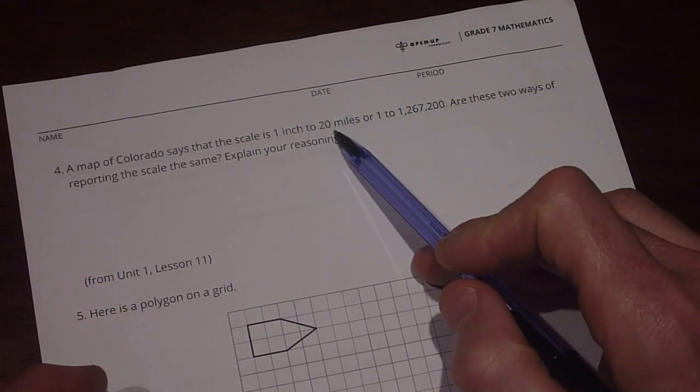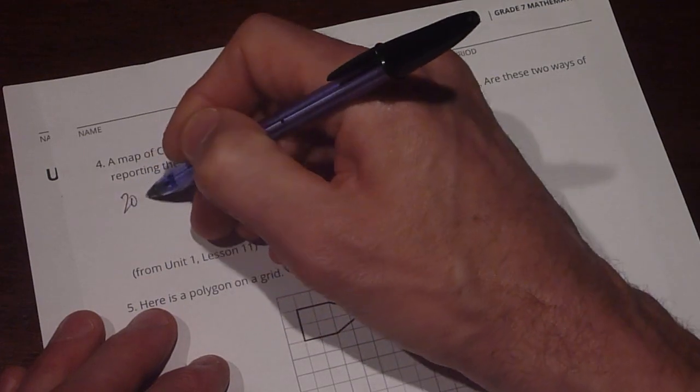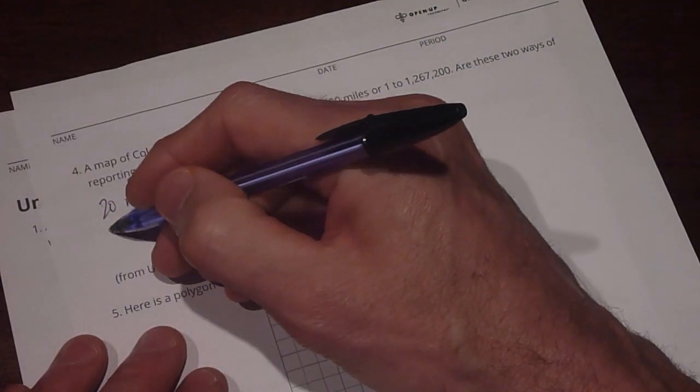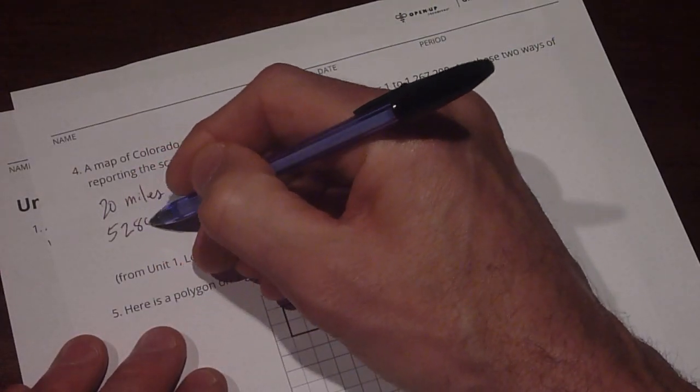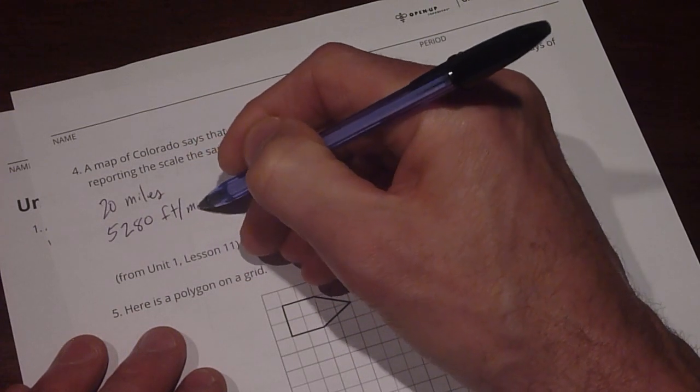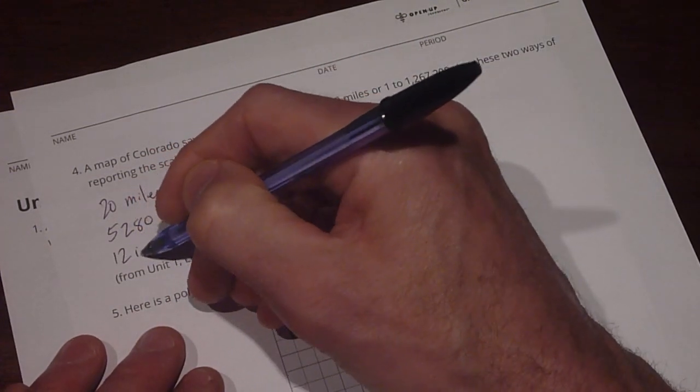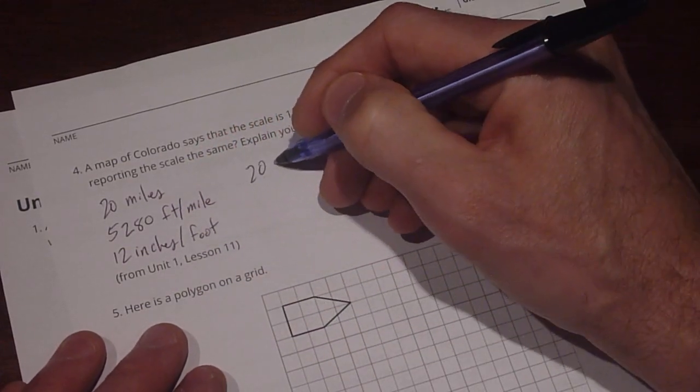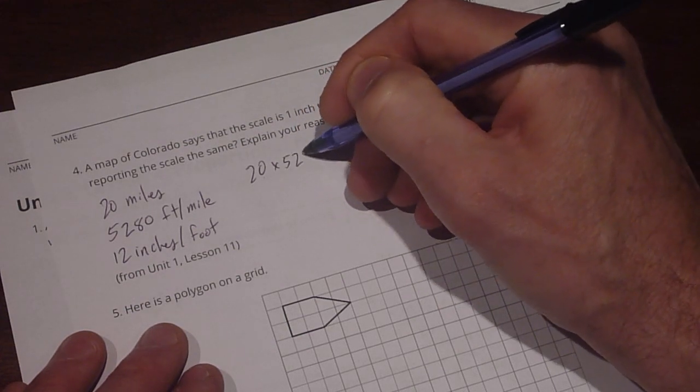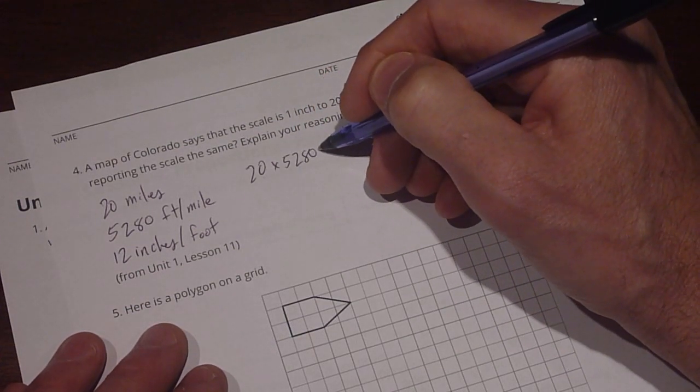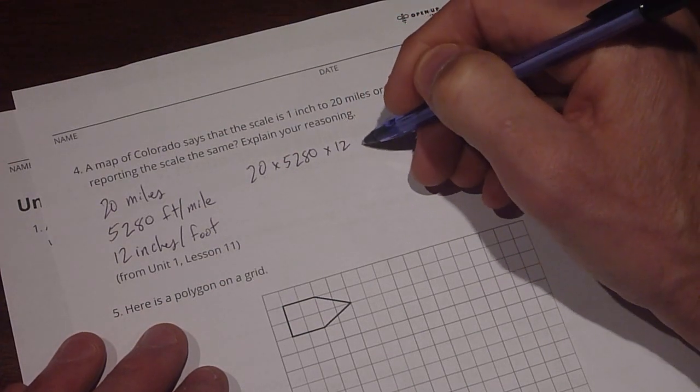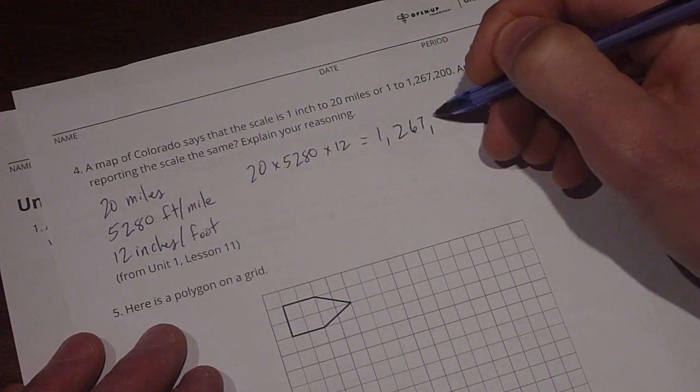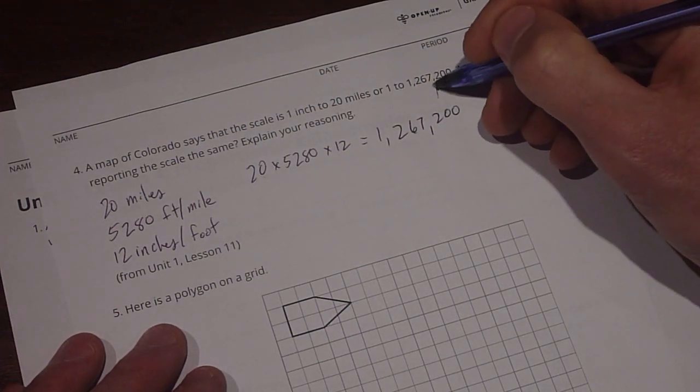Well, 20 miles. So 20 miles. How many inches can we find in 20 miles? Well, I know that there are 5,280 feet per mile and 12 inches per foot. So if we multiply 20 miles times 5,280 feet per mile times 12 inches per foot, that's going to wind up giving us 1,267,200. And that aligns with this number right here.